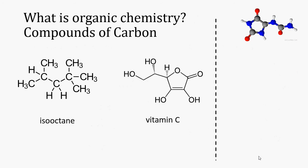After it became clear that there was no vital spark that made organic matter different than inorganic matter, a new definition of organic chemistry was proposed. As elements of the periodic table were being discovered, it became clear that all organic compounds contained one or more carbon atoms in their structure. And thus, organic chemistry became the study of the compounds of carbon.